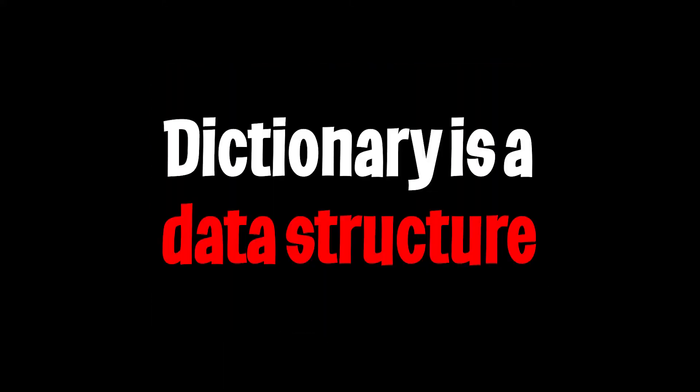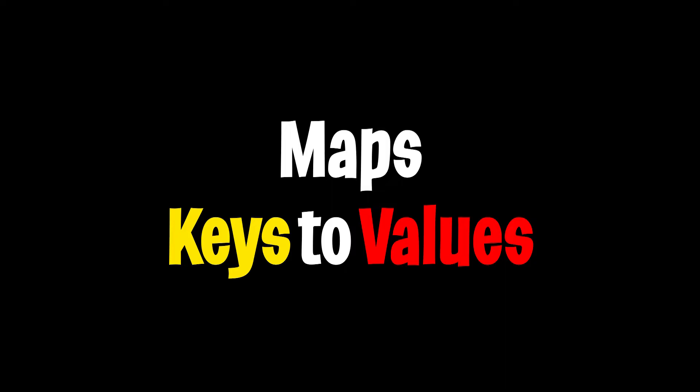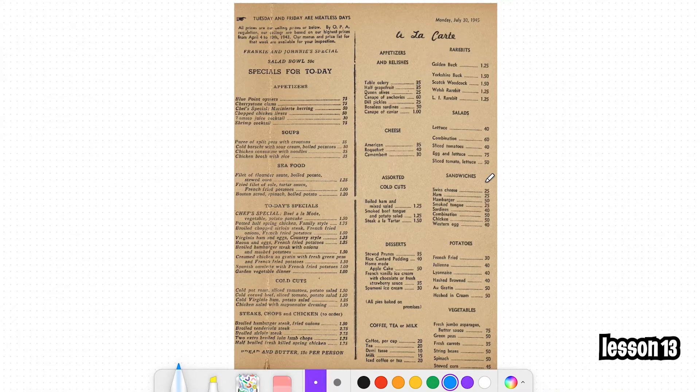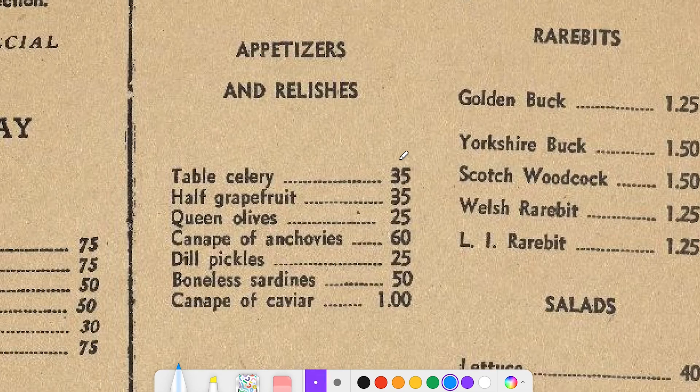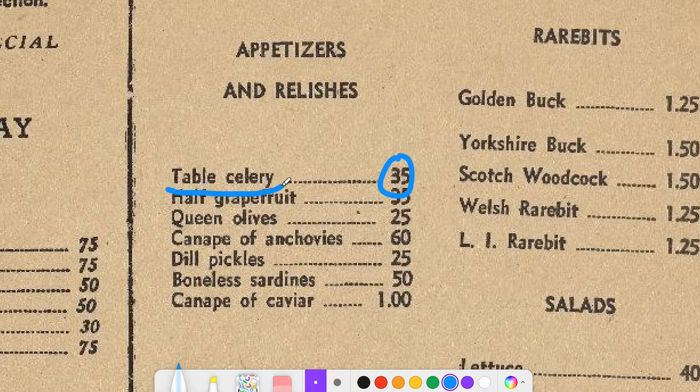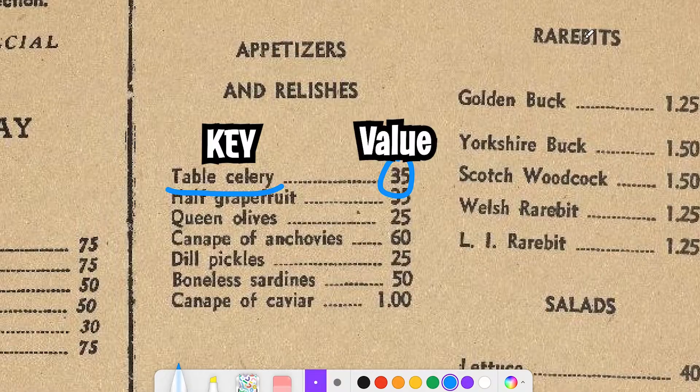First off, a dictionary is a data structure that maps keys to values. We talked about this very early on in the bootcamp series, where we basically associated a price to an item inside a menu, where basically the menu item is the key and the price is the value.